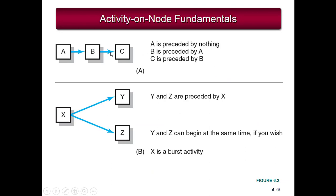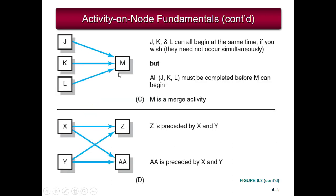The fundamentals slide shows that A has no predecessors, A precedes B, B precedes C, and C is the end — so A is the start and C is the end. In the second diagram, X is a burst activity with two nodes, Y and Z, depending on it. Another example shows that J, K, and L have no predecessors and no relationships among them, so they could start at any time. They all precede M, and all of J, K, and L must be completed before M can begin — M is also known as a merge activity.